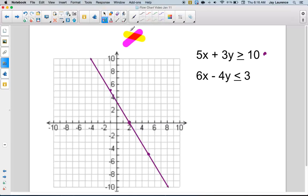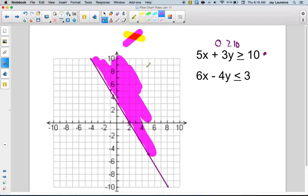Now, I have to determine my shading. Well, if I use the origin as my test point, won't I get zero is greater than or equal to 10. Which is not a true statement. So, I'm going to shade the other side of the origin. The other side of the origin.